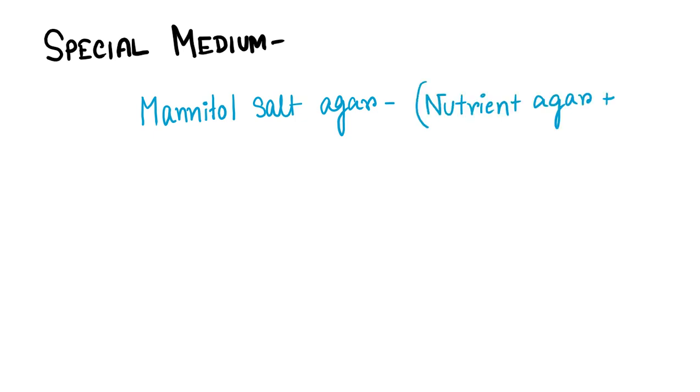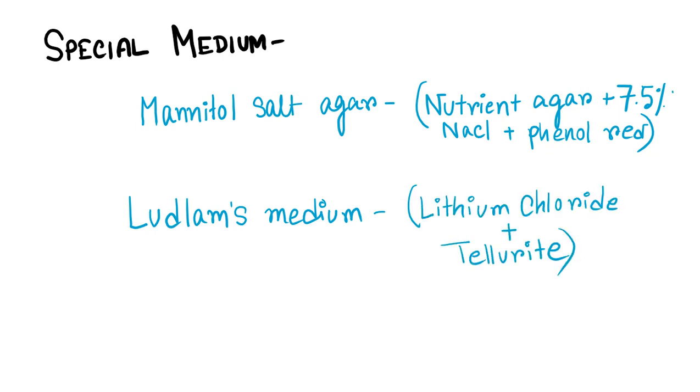Some special medias are useful when staphylococci are expected to be scanty or outnumbered by other bacteria. They are known as selective medium. They prevent the growth of other bacteria and help in the growth of staphylococcal colony. Examples include Mannitol salt agar, which contains nutrient agar plus 7.5% NaCl plus phenol red as indicator. The next one is Ludlam's medium, which contains lithium chloride and tellurite. The last one is Salt milk agar.